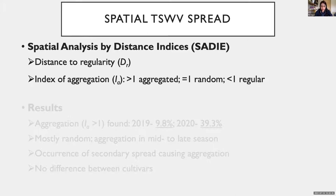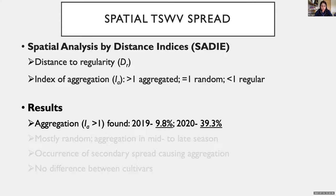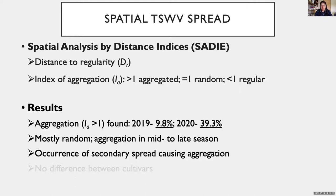For spatial spread, we used Spatial Analysis by Distance Indices, SADI, to analyze TSWV spatial patterns. Distance to regularity is the central concept of SADI, defined as the number of moves required for counts in sampling units to produce a regular distribution in the area. The major output is the index of aggregation, I-sub-A. Aggregation is determined when the index is significantly greater than one. TSWV distribution at each sampling date was analyzed, and we found aggregation about 10% of the time in 2019 and 40% of the time in 2020. In general, TSWV was randomly distributed in the early season, and aggregation was often found in mid to late season. These results support the occurrence of secondary spread causing aggregation of TSWV in the mid to late season, and no difference in TSWV distribution was found between cultivars.